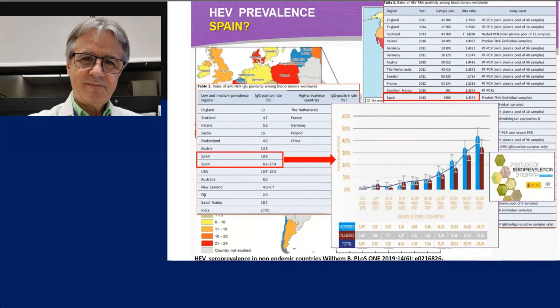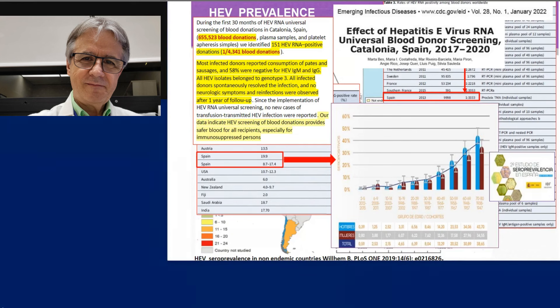In the case of Spain, the prevalence is significant across several studies, with an increase with age as seen in a national prevalence study. A recent update of RNA prevalence in the Vall d'Hebron blood bank analyzing more than 7,000 blood donor donations found again a very high prevalence of RNA — one in every 4,000. They confirmed zoonosis as the main route of infection in our country, as most infected donors reported consumption of pig meat and sausage. Around 60% were negative for IgM and IgG, indicating they were in the window period but still infectious. All hepatitis E belonged to genotype 3. Since the implementation of RNA universal testing in Catalonia, no new cases of transfusion-transmitted infection were reported.